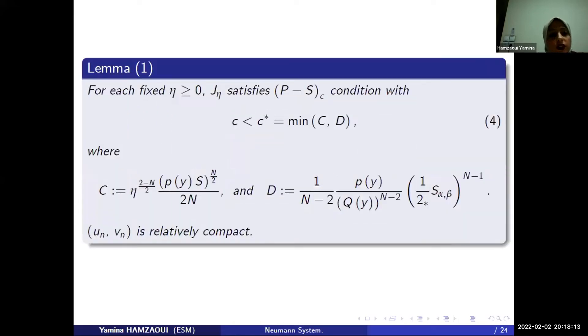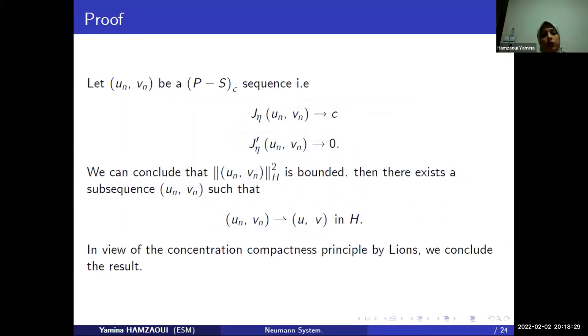For each fixed eta positive, G eta satisfies the Palais-Smale condition with C inferior at C star equal minimum of C and D. So you have sequence U_n, V_n is relatively compact.